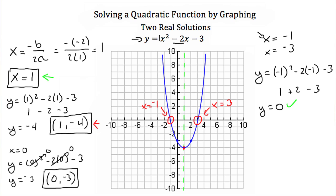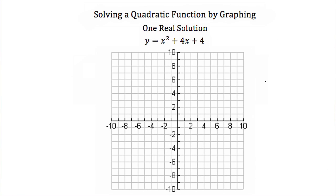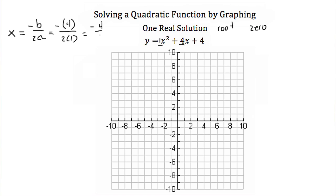So you can solve a quadratic function just by graphing it and looking at where it intercepts the x-axis. Now let's try solving a quadratic function that has only one real solution, root, or zero. Here we have y is equal to x squared plus 4x plus 4. We're going to follow the same steps and graph this. First, we'll find its axis of symmetry using the formula x is equal to negative b over 2a, where b is 4 and a is 1. We'll have negative 4 over 2 times 1, so our axis of symmetry is x is equal to negative 2.